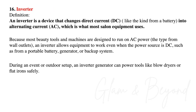Number sixteen, inverter. An inverter is a device that changes direct current — like the kind from a battery — into alternating current, which is what most salon equipment uses. Because most beauty tools and machines are designed to run on alternating current from wall outlets, an inverter allows equipment to work even when the power source is direct current, such as from a portable battery, generator, or backup system. During an event or outdoor setup, an inverter generator can power tools like blow dryers or flat irons safely.